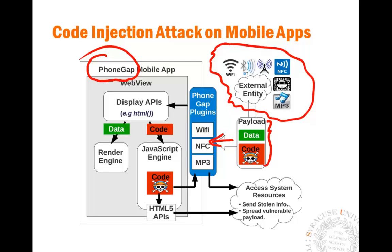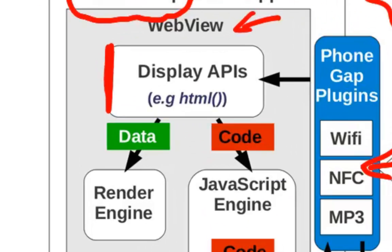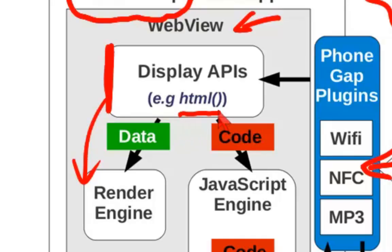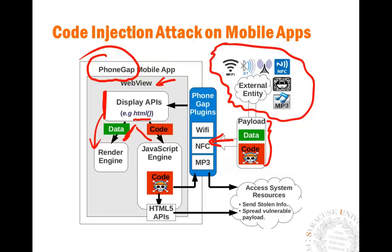This payload comes into the app through the PhoneGap plugin. Once it's in the app and you want to display it, if you use a safe API, both the data and the code go to the render engine and everything is displayed — you are safe. But if you use an unsafe API such as innerHTML, that API is more intelligent: it looks into your payload, finds the code, sends the data to the renderer, and sends the code to the JavaScript engine. That's where the code gets triggered.